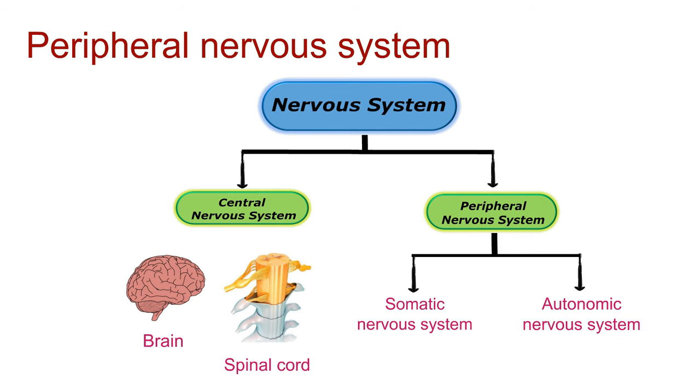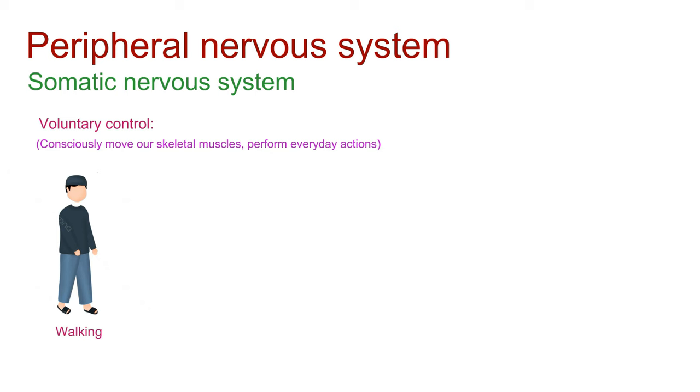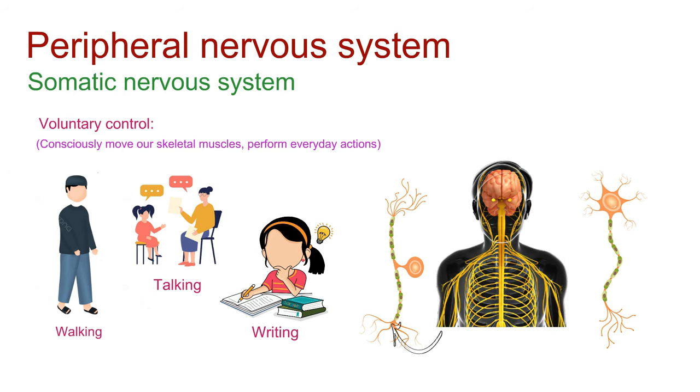Now, let's break it down. The somatic nervous system is all about voluntary control. It allows us to consciously move our skeletal muscles, performing everyday actions like walking, talking, and writing. Sensory and motor neurons are the key players in this system, transmitting signals between the body and the central nervous system.